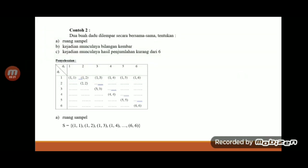Berarti di sini ruang sampelnya itu adalah 1,1, 1,2, 1,3. Semua dihitung, berarti sampai 6,6 ini, berarti ada 36.